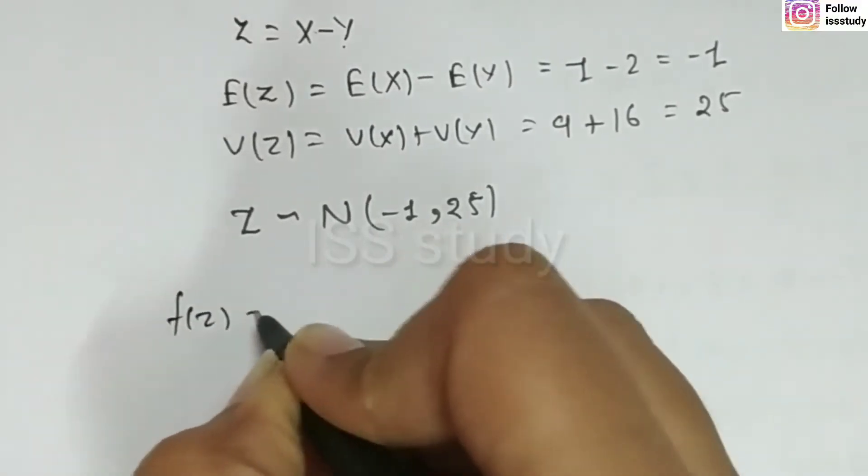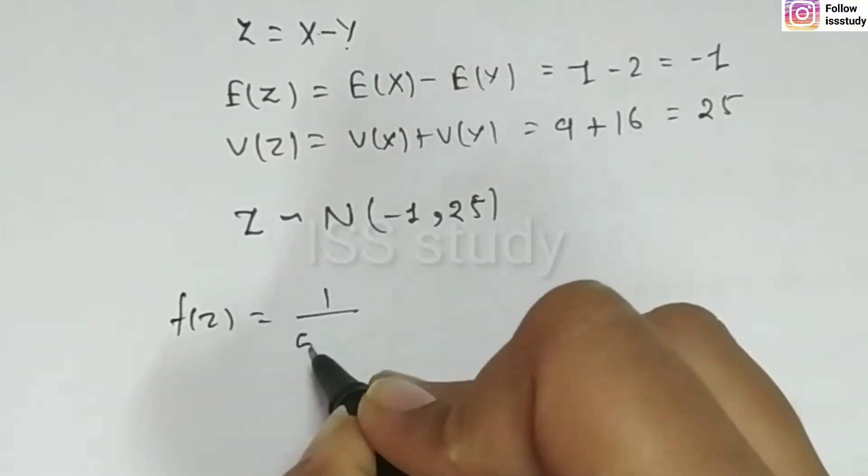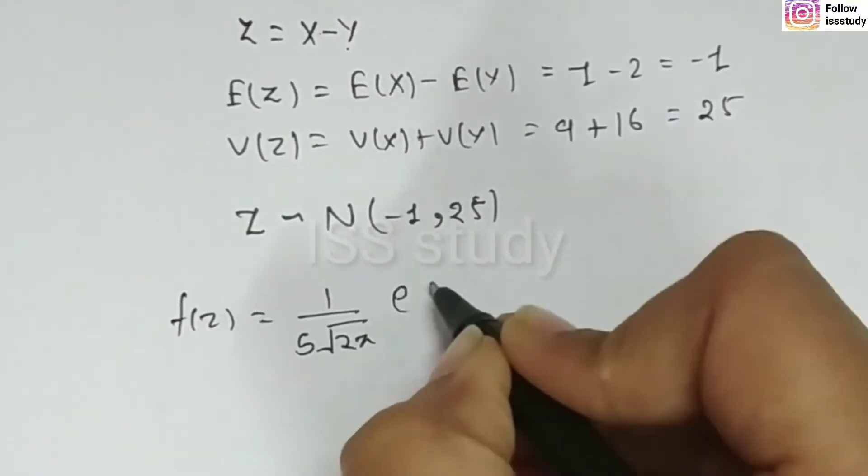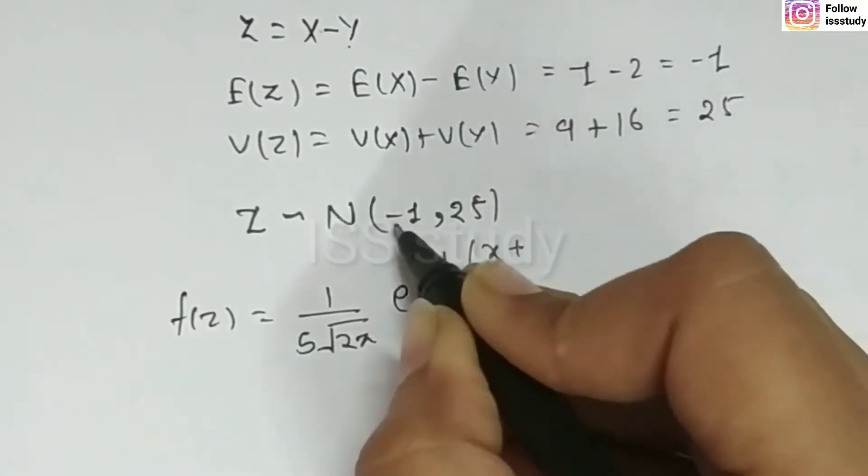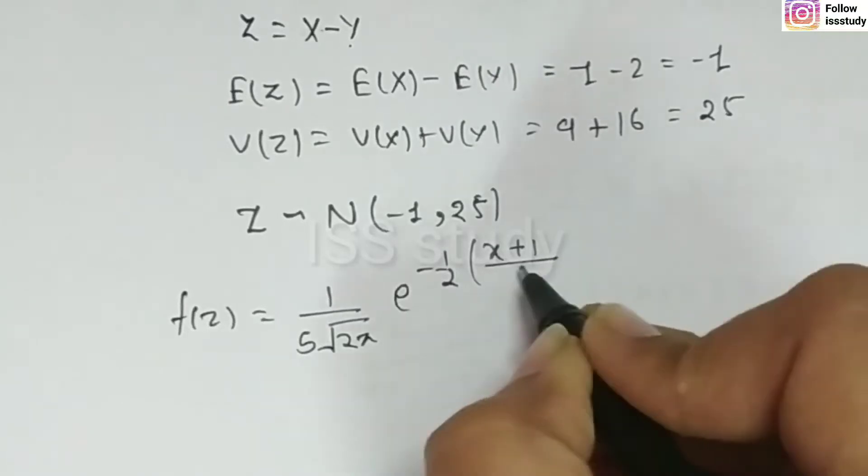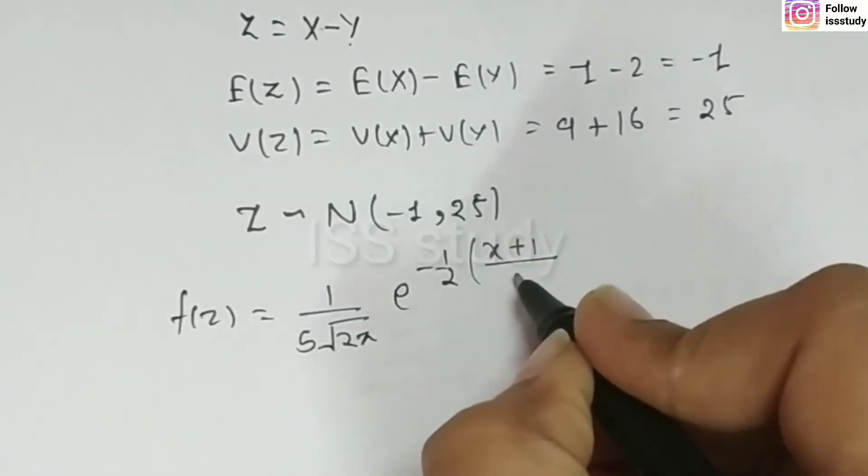So, you can see f of z is equal to 1 upon sigma. At the place of sigma, 5 under root 2 pi, e to the power minus half. Then, x minus mu. Minus mu, so, its value is minus 1. So, when we keep it, then this will be plus 1.